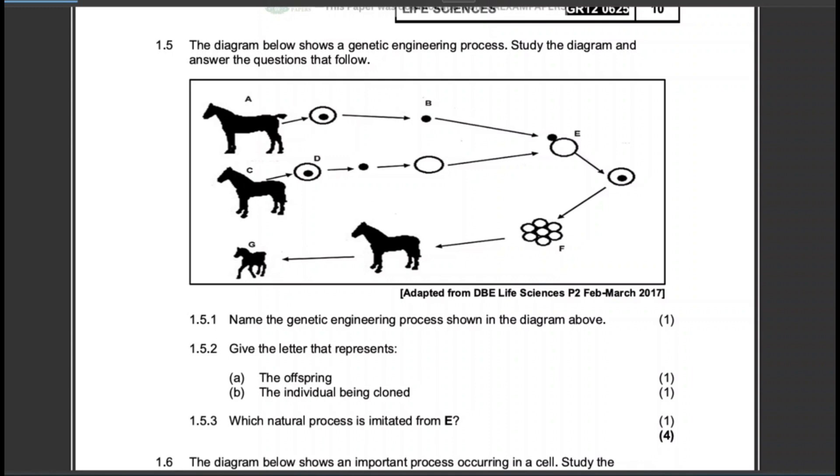So let us answer this question quickly. The diagram below shows a genetic engineering process. Study the diagram and answer the questions that follow. So this is a straightforward cloning diagram, that is a giveaway. This is straightforward, we don't have to think hard. We know that this is basically the process of cloning.